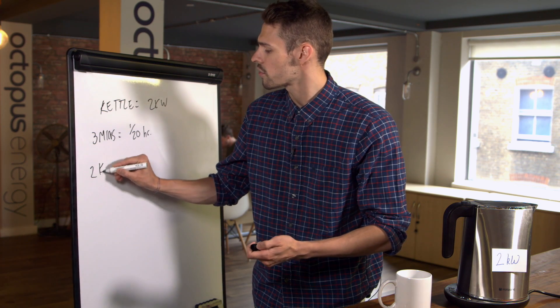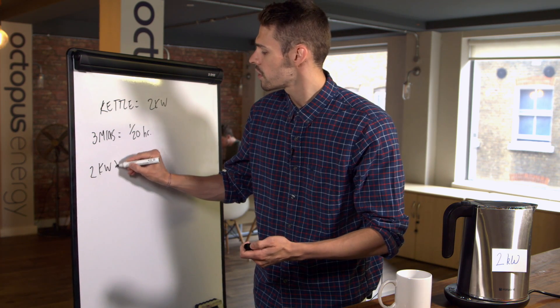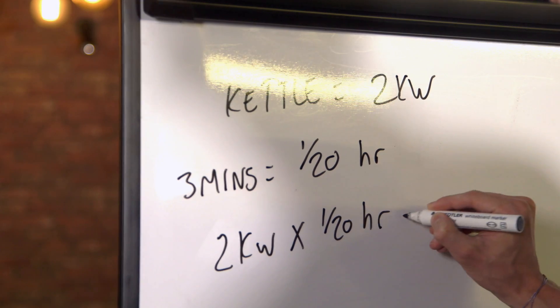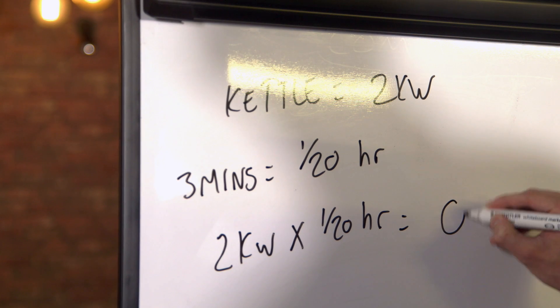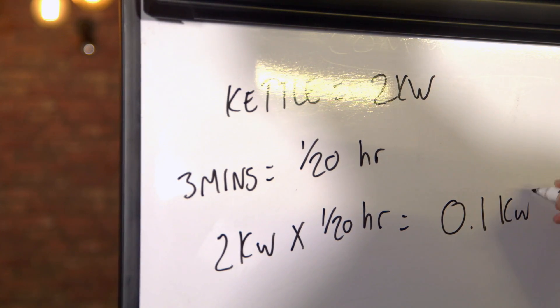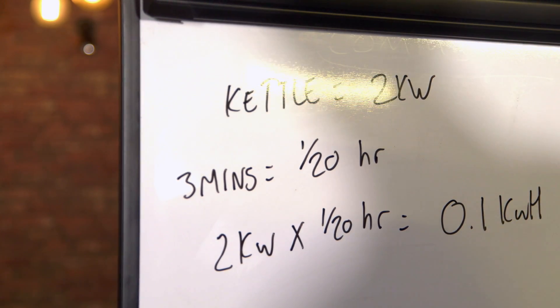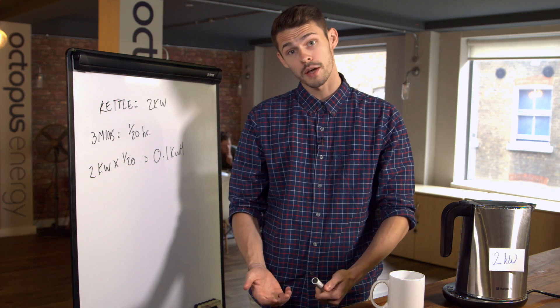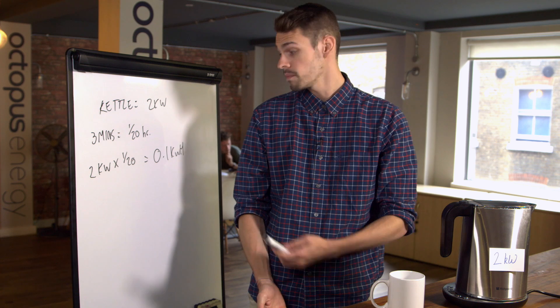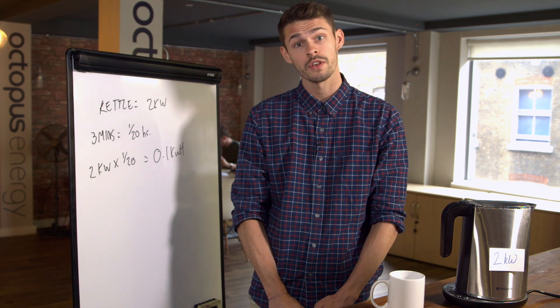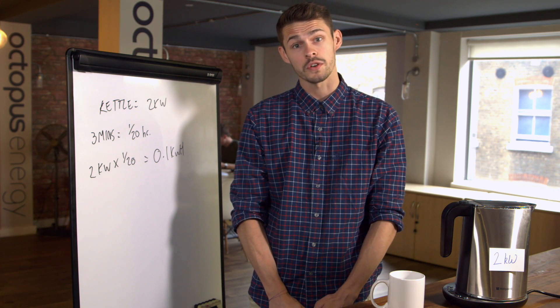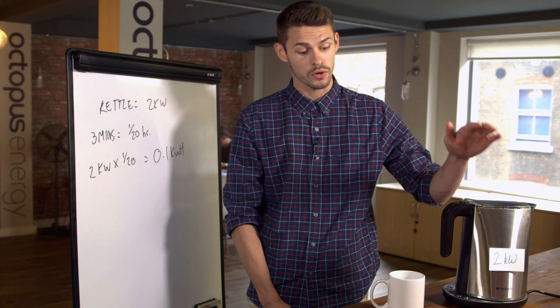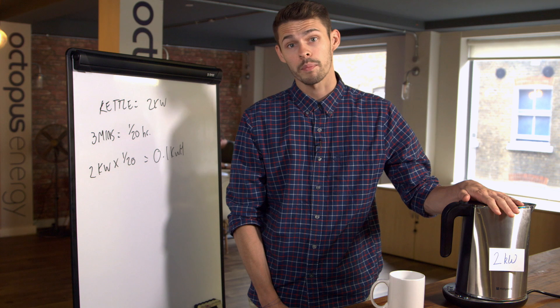So if we times our two kilowatts by our 1/20th we get 0.1 kilowatt hours. If we talk about the cost of that, our Supergreen tariff is about 13p in terms of its unit price. So if we times our 13p by our 0.1 kilowatt hours, that means it will cost about 1.3p to boil this cup of tea.